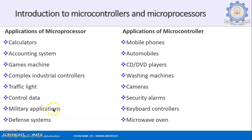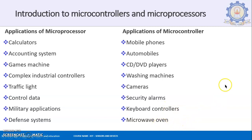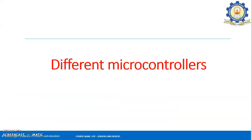The applications of microprocessors in your day-to-day life include calculators, accounting systems, game machines, complex industrial controllers, traffic light control, military applications, and defense systems. Whereas devices commonly seen around you — mobile phones, automobiles, CD/DVD players, washing machines, cameras, security alarms, keyboard controllers, and microwave ovens — are the ones that use microcontrollers. These are the applications of both the microprocessor and the microcontroller.